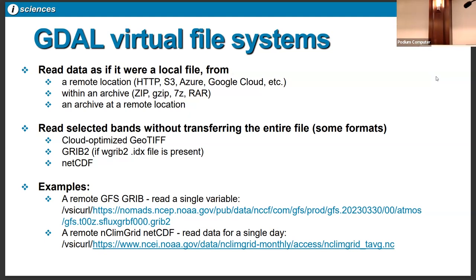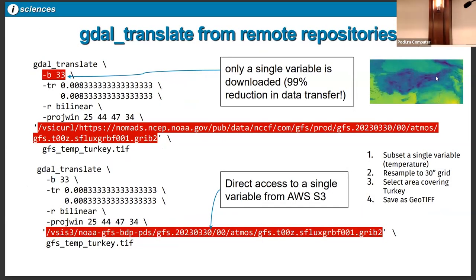There are a couple of examples here. The VSI curl is the key piece, followed by a URL with a web interface, or VSI S3 for S3 buckets. Two examples — one for NetCDF, one for GRIB — both going to the web. This is just demonstrating how to do this using the command line tools. We're trying to pull off temperature data for Turkey and reproject it at 30 arc-second resolution. The key thing is here we're telling it to get the data off the web, or here off an S3 bucket, and in both cases we're just pulling the temperature band out of a complex data file that has on the order of a hundred variables in it.